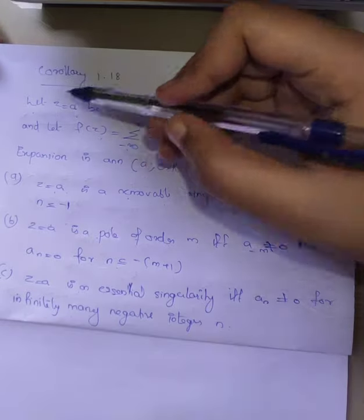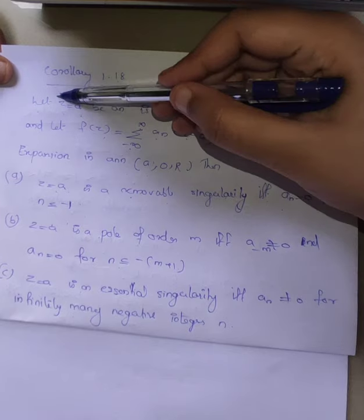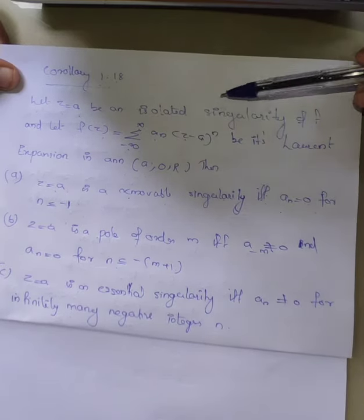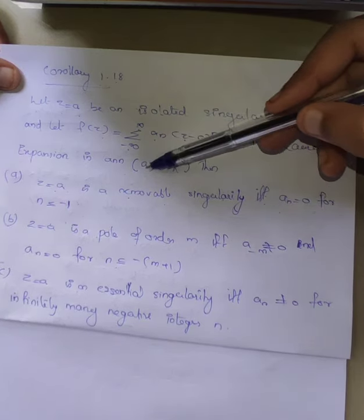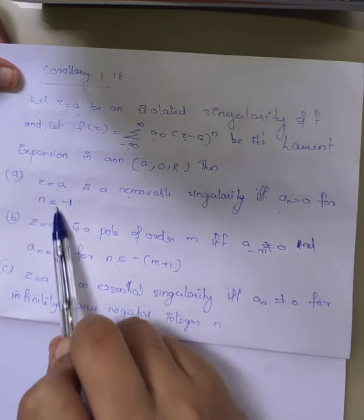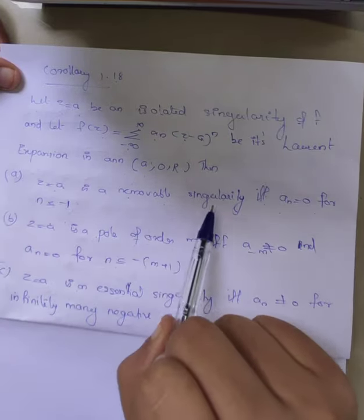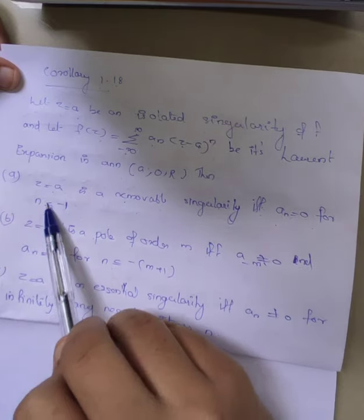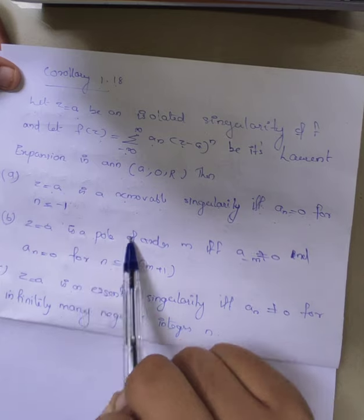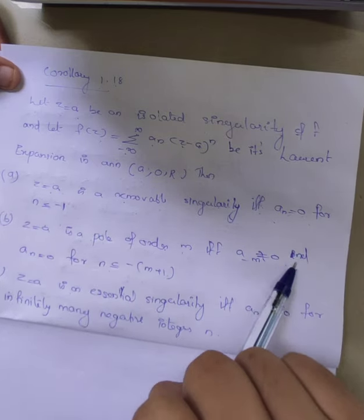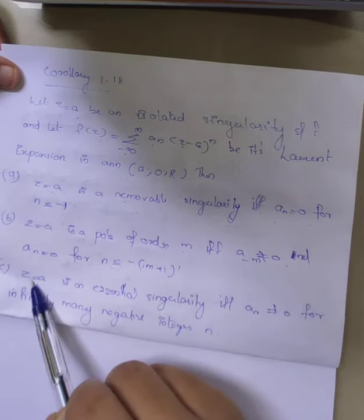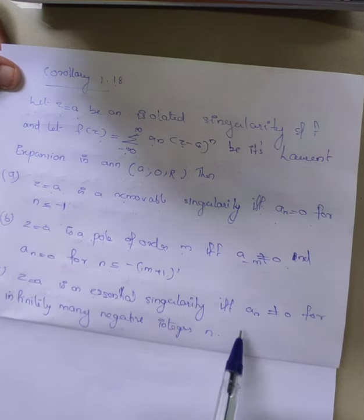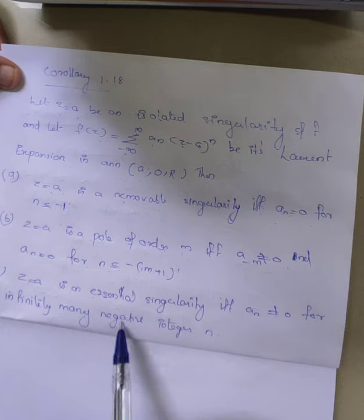Today we have Corollary 1.18, which states: let z equal to a be an isolated singularity of a function f, and its Laurent series expansion in the annulus A(0,r) is given. Then z equal to a is a removable singularity if and only if a_n equals 0 for n less than or equal to minus 1. z equal to a is a pole of order m if and only if a_{-m} is not equal to 0 and a_n equals 0 for n less than or equal to minus (m+1). z equal to a is an essential singularity if and only if a_n is not equal to 0 for infinitely many negative integers n. We will first prove part (a).